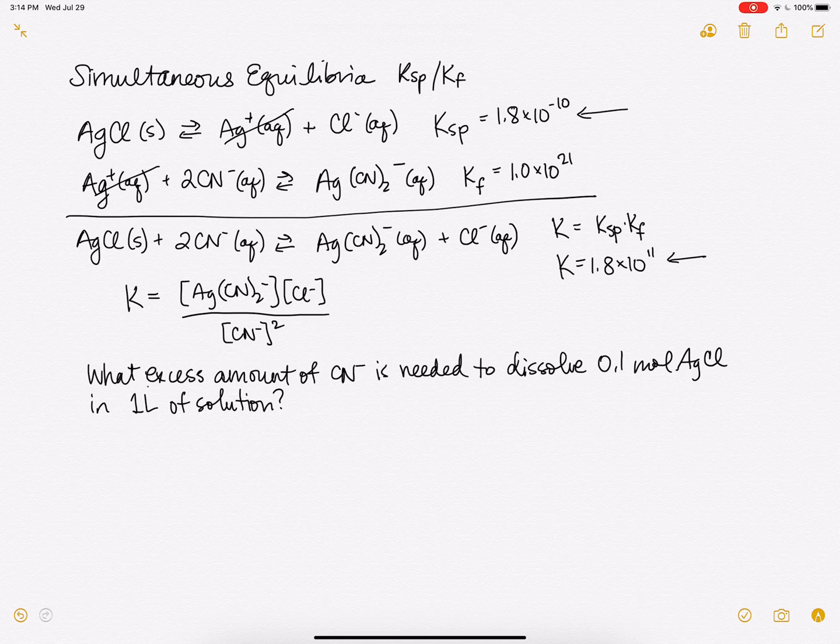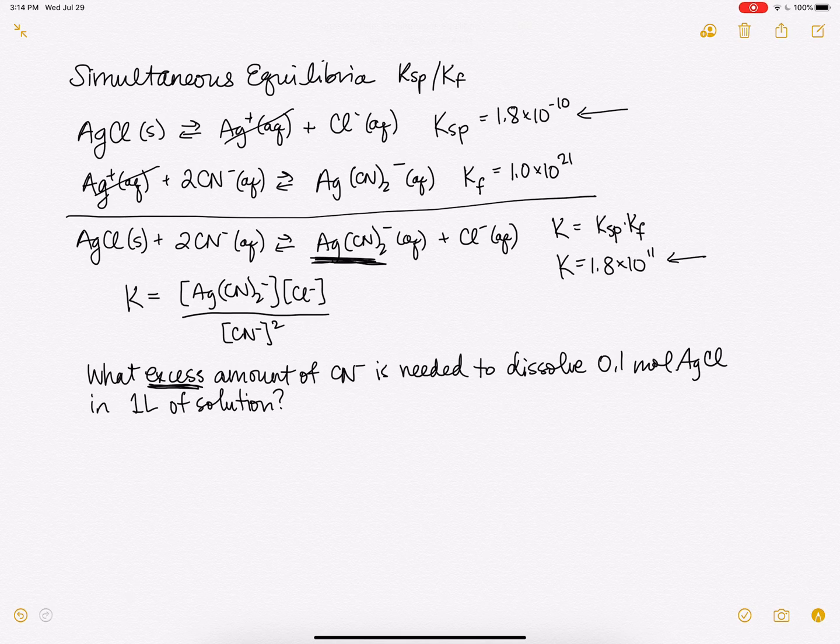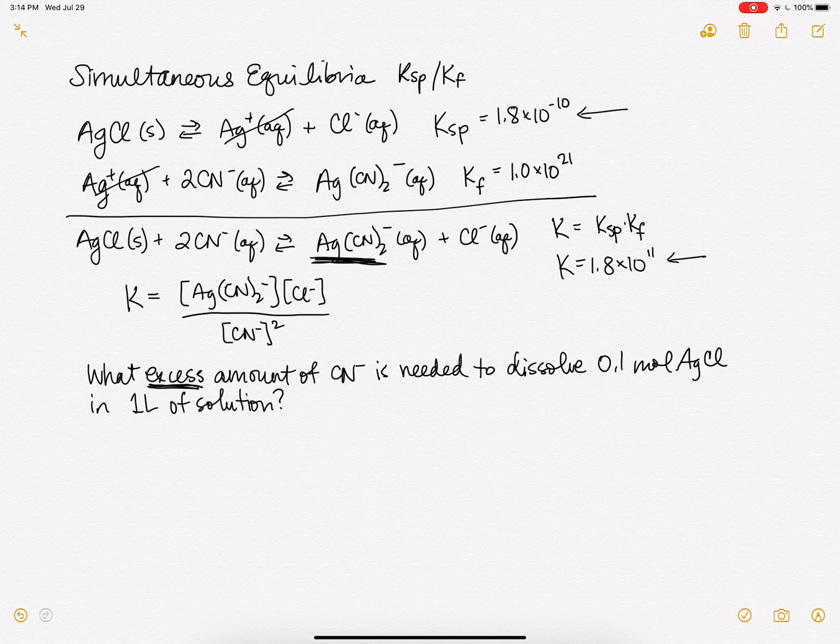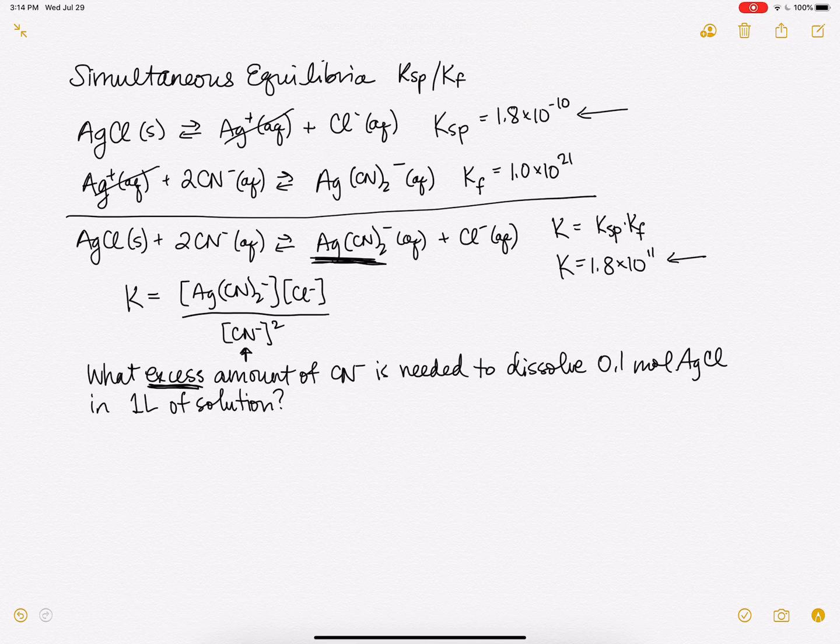So I want to just point out this word excess. Obviously if you were making this complex ion, you need to have some cyanide there and it would happen stoichiometrically. For each silver ion you would need two cyanide ions, right? But we want to know what's the excess amount. So in other words, we want to solve for this cyanide concentration right here. How much extra do we need to add?